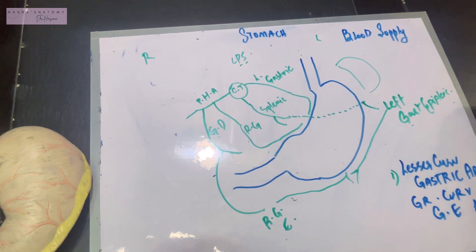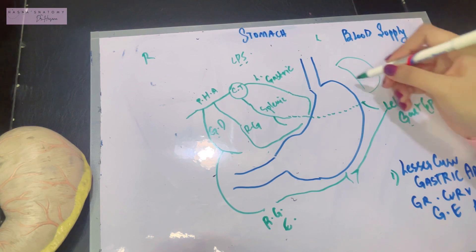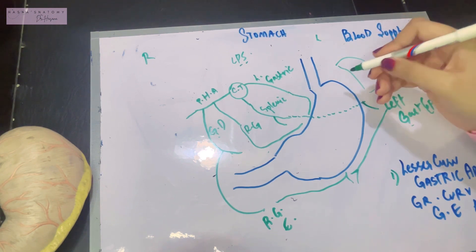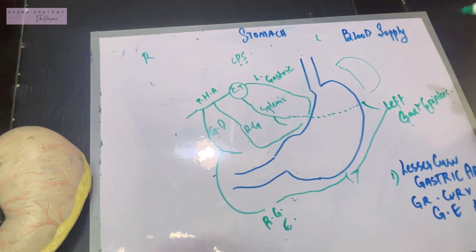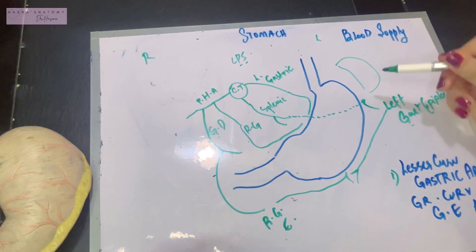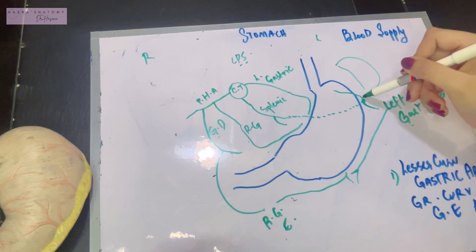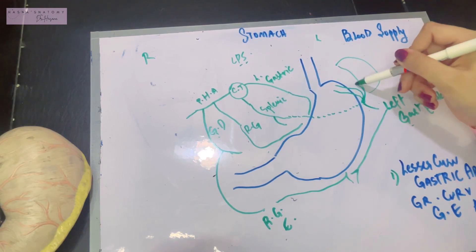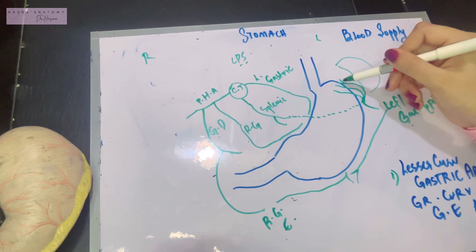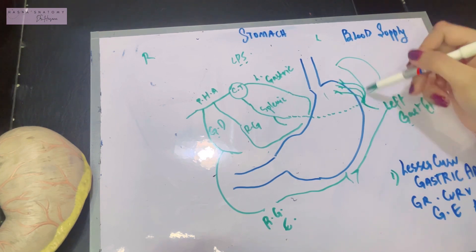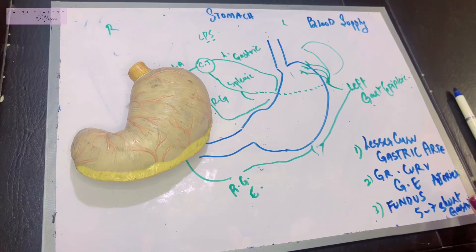Now there is an area that is left: the fundus of the stomach. What is going to supply the fundus? From the splenic artery, five to seven short gastric arteries arise and they supply the fundus of the stomach.